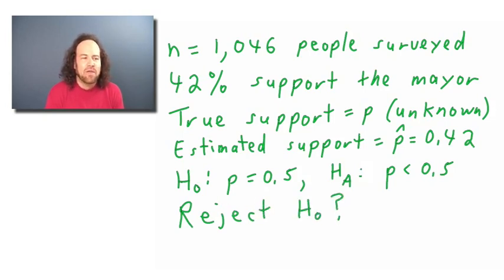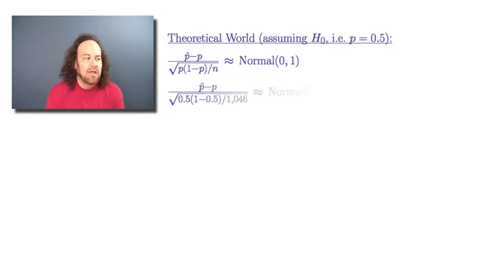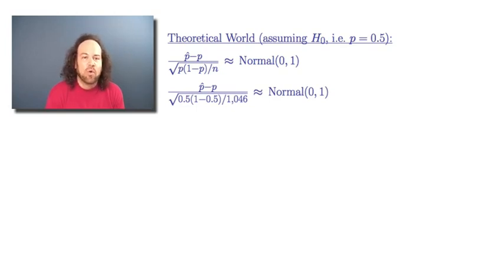How are we going to compute the p-value? We start by remembering that in the theoretical world, assuming H0, the quantity (p-hat minus p) divided by the square root of p times (1-p) over n has approximately a standard normal distribution. So filling in the values, (p-hat minus p) over the square root of 0.5 times 0.5 divided by 1,046 should have approximately a standard normal distribution.